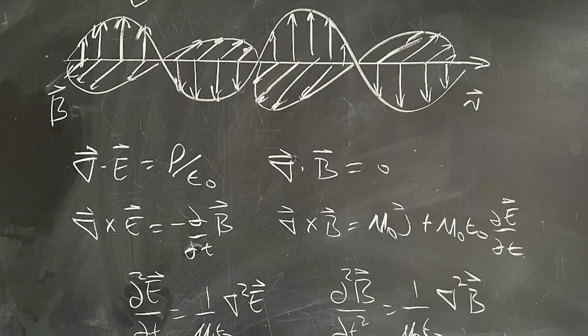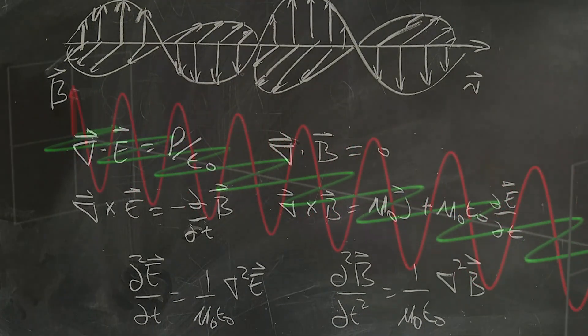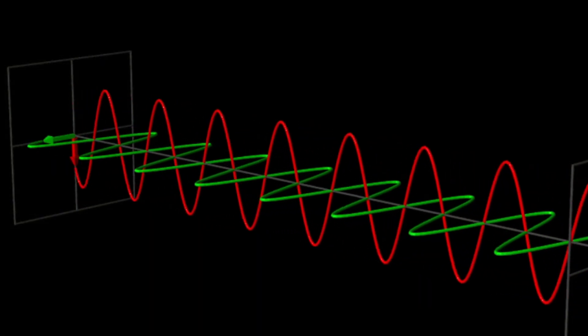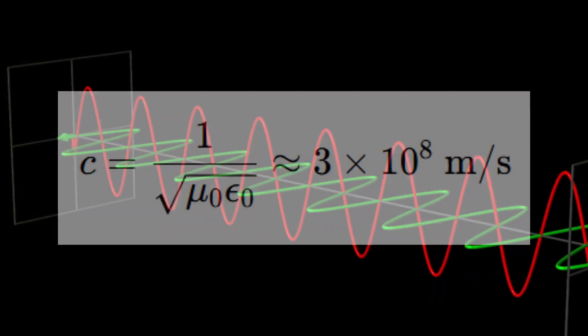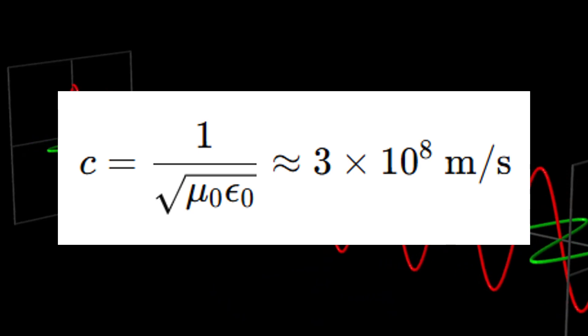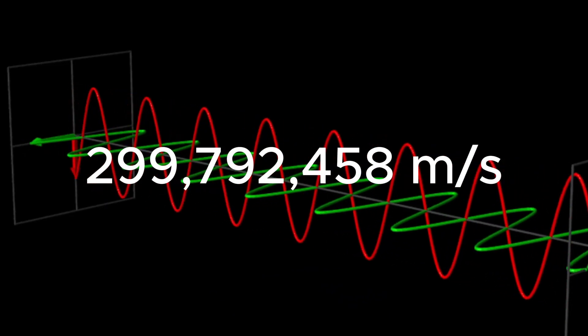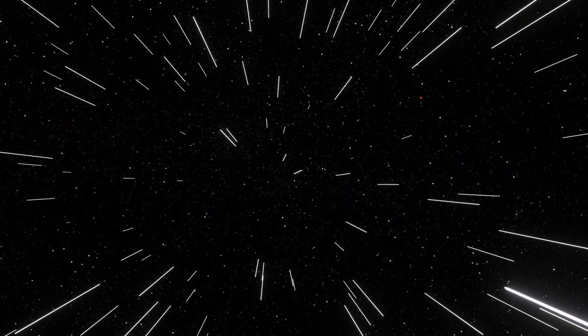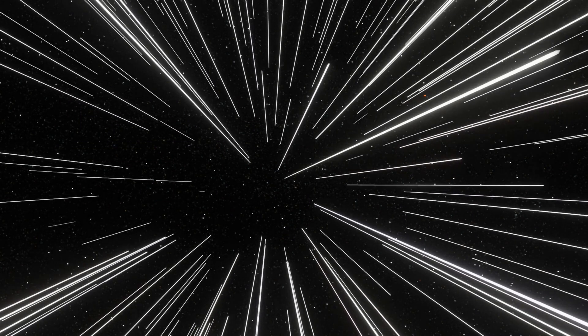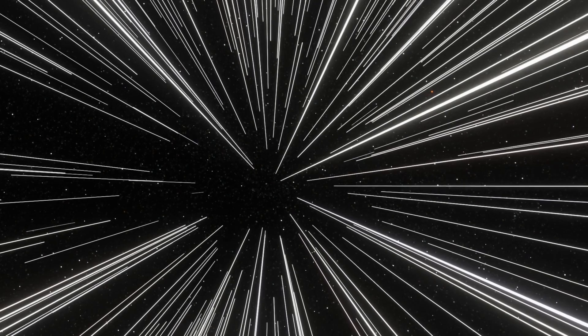So when Maxwell worked out the equations for how electric and magnetic fields interact, he realized they naturally predict a wave moving at a fixed speed. That speed turned out to be about 300,000 kilometers per second, exactly the speed of light. So light must be an electromagnetic wave, right?